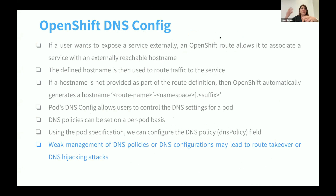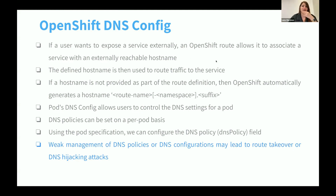We can also expose a service or web application externally. There is a specific command a developer or user can run to expose an application or service. When we expose the application externally, OpenShift will automatically generate a long URL for the application to be accessible outside the cluster. It always starts with the route name — usually a long string of the pod name and service name — followed by a dash, the namespace, and a dot with some specific suffix like '.com' or similar.